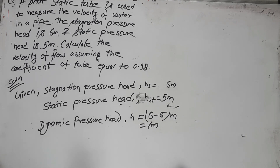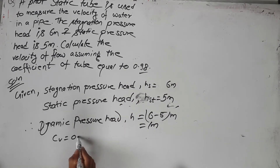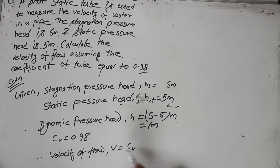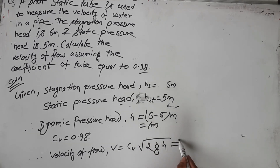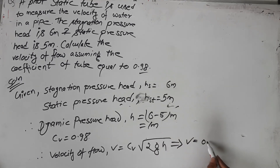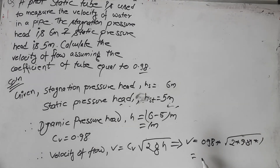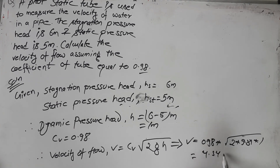We are asked to find the velocity of flow. Coefficient Cb is given as 0.98. Using the formula V equals Cb times root under 2gh, this gives V equals 0.98 into root under 2 into 9.81 into 1 meter. When we calculate this, we get 4.34 meters per second.